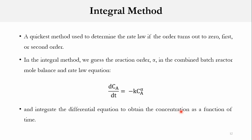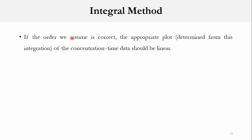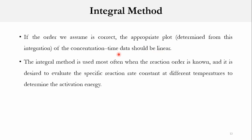If the assumed reaction order is correct, the resulting plot of the concentration-time data will be a linear plot. The integral method is most used when the reaction order is known and it is desired to evaluate the specific reaction rate constant at different temperatures to determine the activation energy. So there are two advantages: first, if the reaction order is unknown, we can guess it and verify by checking linearity of the plot; second, the main application is when order is known and we need to determine K at different temperatures to find activation energy.